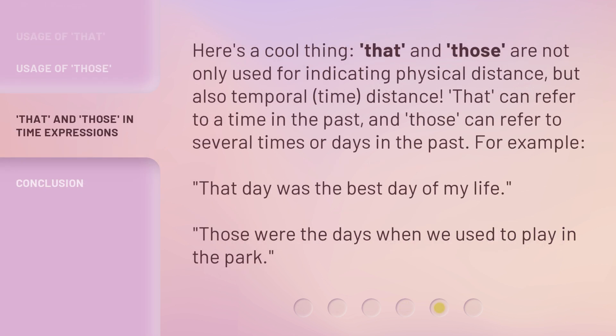Here's a cool thing. That and those are not only used for indicating physical distance, but also temporal — time — distance. That can refer to a time in the past, and those can refer to several times or days in the past. For example: that day was the best day of my life. Those were the days when we used to play in the park.